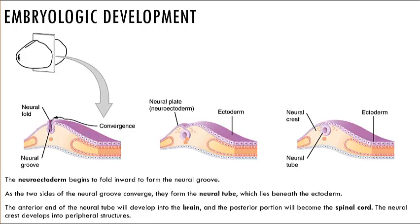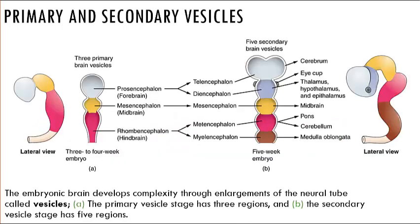Thin flat layers of ectoderm begin to thicken to form the neural plate, which then invaginates to form the neural groove, also sometimes referred to as the neural fold. Essentially, two sides of the neural groove touch, forming an internal passageway called the neurocoel. This structure is then called the neural tube. The anterior end of the neural tube begins to enlarge, forming three prominent divisions — the primary brain vesicles.